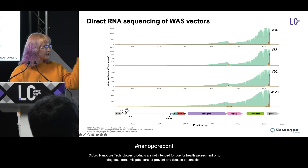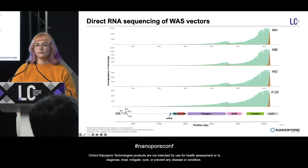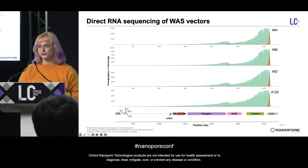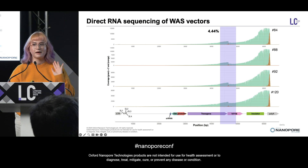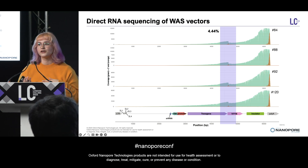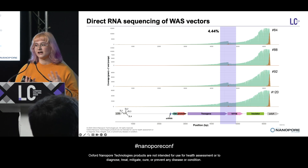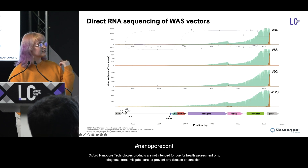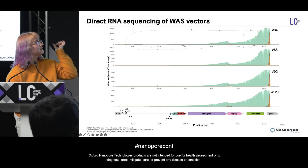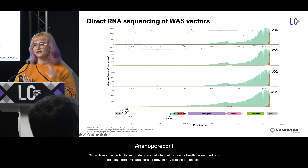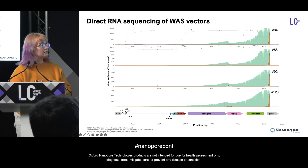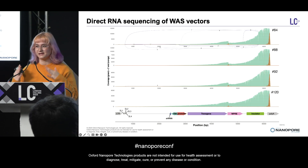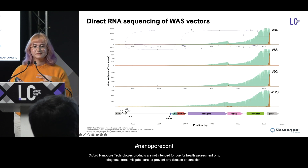When we look at the sequence around that location we find a non-canonical poly A site motif. Depending on the sample, this accounts for around three to five percent of the reads — not a huge amount, but still nice that we can detect it. We did also look at splicing; there's very little splicing going on — less than one and a half percent of the reads in total were spliced — which we kind of expect given these vectors have been specifically modified to prevent splicing.